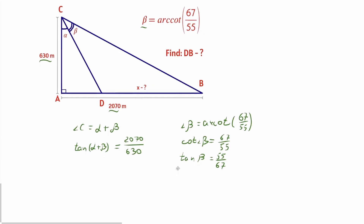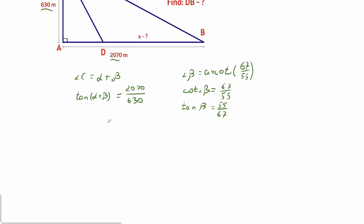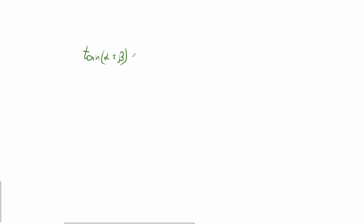So we've made some initial preparation to solve the problem. Now let's go back to our tangent of alpha plus beta and derive the formula for the tangent of a sum of two angles. By definition, tangent of alpha plus beta is equal to sine of alpha plus beta divided by cosine of alpha plus beta.